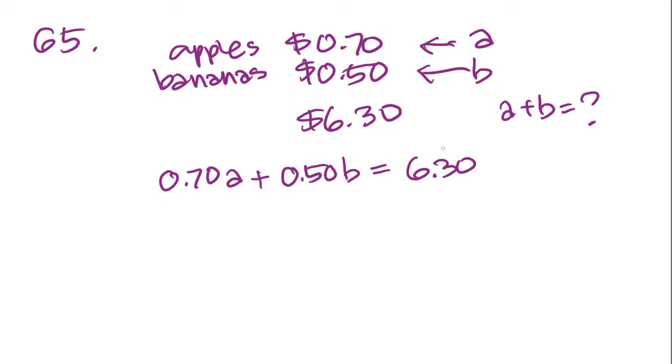Whenever you have decimals like this, it's a pain to calculate, so what you should really do here is multiply both sides of the equation by 10. What you end up having is 7A plus 5B equals 63, much easier to work with.